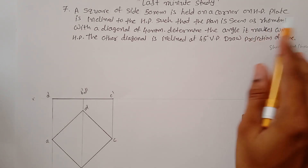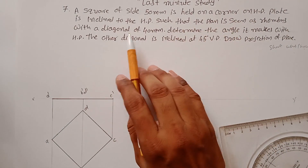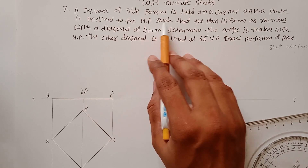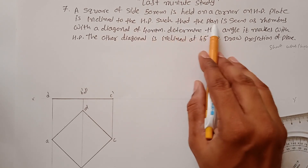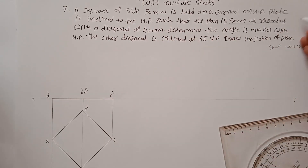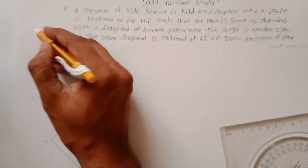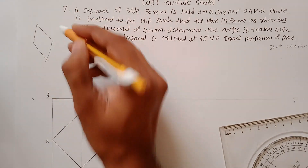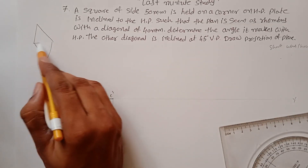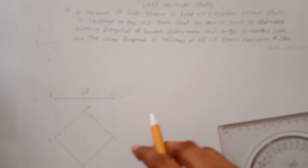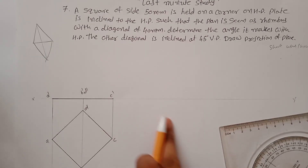For the second position, they are not giving the inclination angle with respect to HP but have told you that the plane is inclined to HP such that the plan is seen as a rhombus. A rhombus has two diagonals — first is a shorter diagonal and second is a longer diagonal. So here the top view or plan looks like a rhombus.